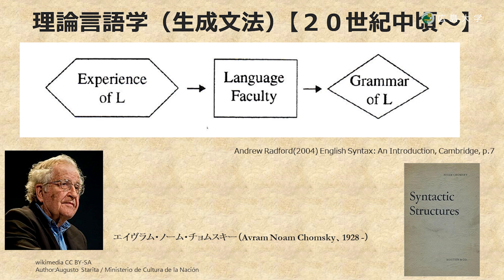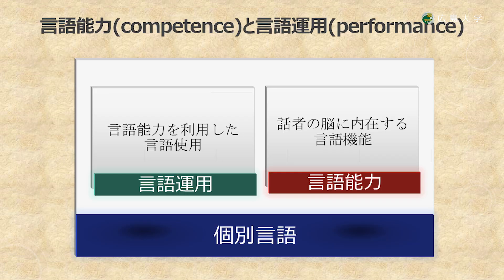このような子どもの言語獲得の仕組みは、人間が言語機能（Language Faculty）という認知機能を生まれながらにして持って生まれ、幼少期にある言語Lの経験にさらされることによりその言語の文法（Grammar）を習得するというものです。そして個別言語には、話者のブレインに内在する言語能力（コンピテンス）と、この言語能力を利用した言語運用（パフォーマンス）という側面があり、言語学研究は言語能力コンピテンスを研究することであると位置づけています。